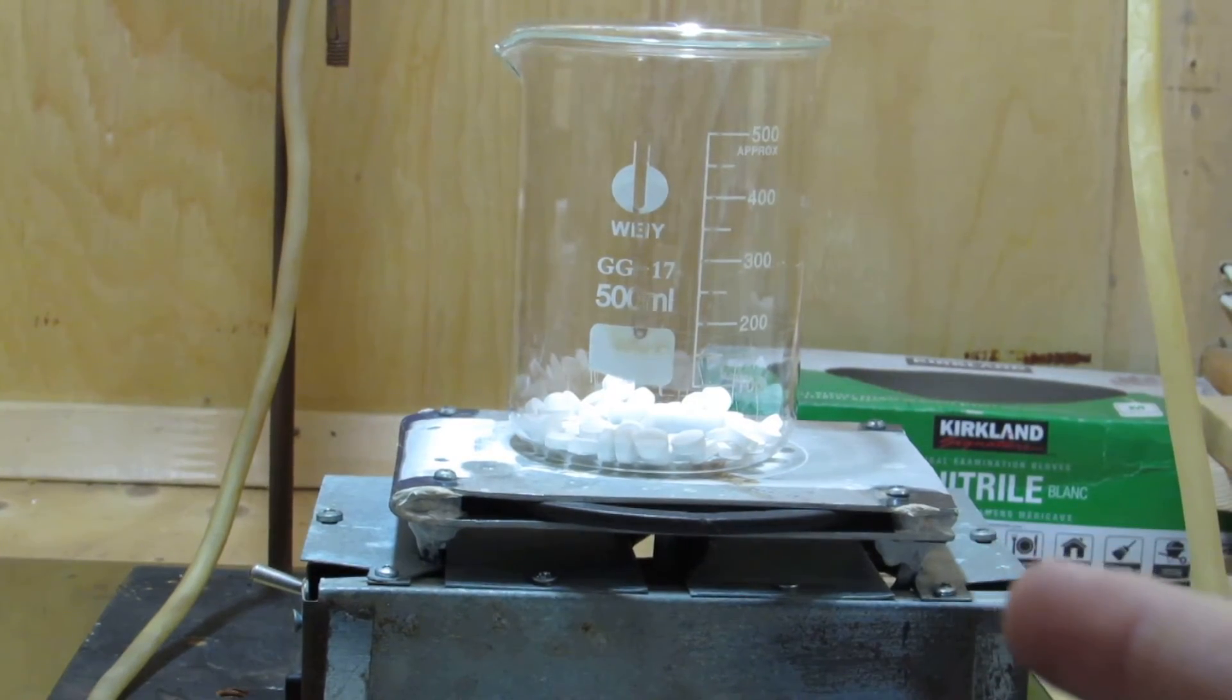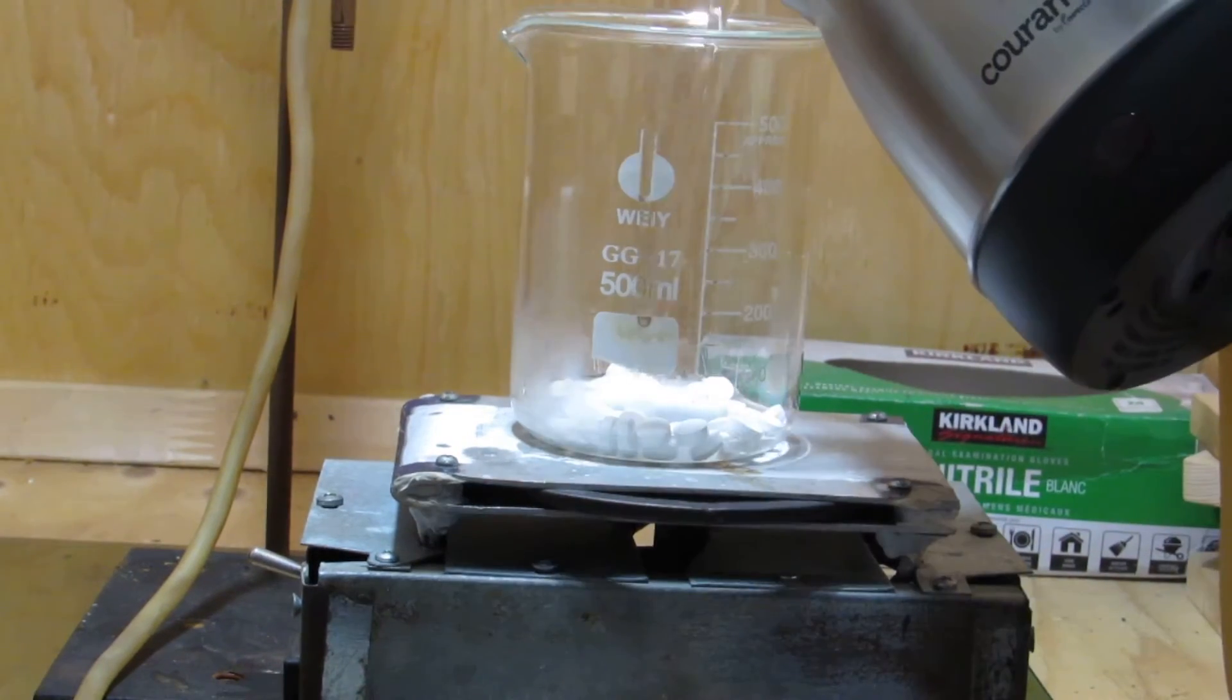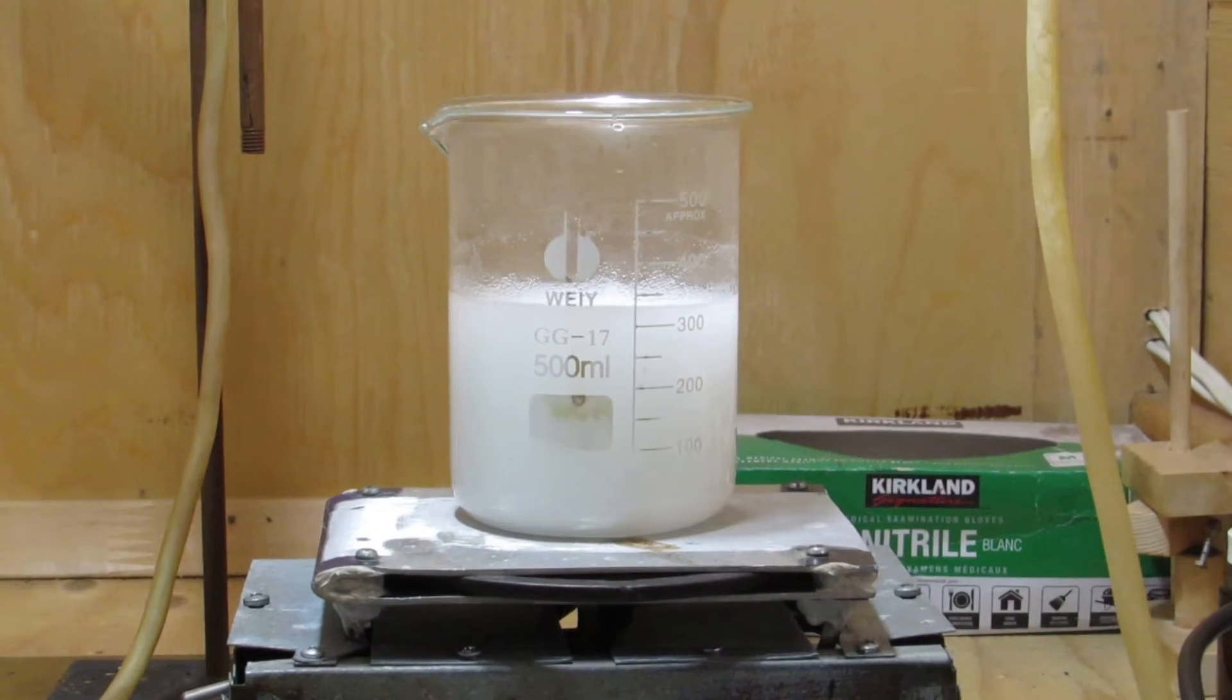To begin, 50 pills are added to a beaker on our homemade hot plate stirrer. Next, around 300 milliliters of hot water was added and the solution was stirred to dissolve all the caffeine.